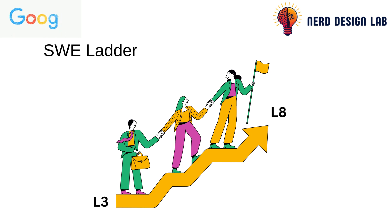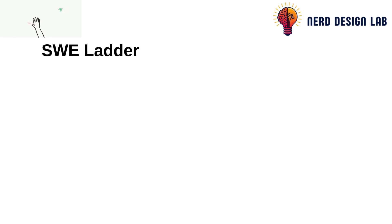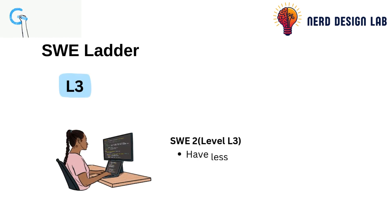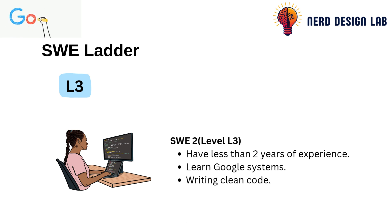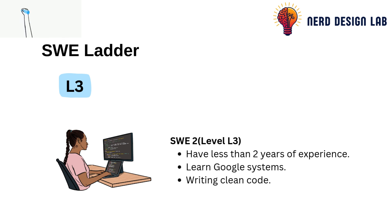Think of it like a game — every level up means you've unlocked new skills and responsibilities. Let's start with L3, which is where new graduates or those with less than two years of experience typically join. At this level, you'll focus on learning Google's systems, writing clean code, and contributing to projects under the guidance of more senior engineers.